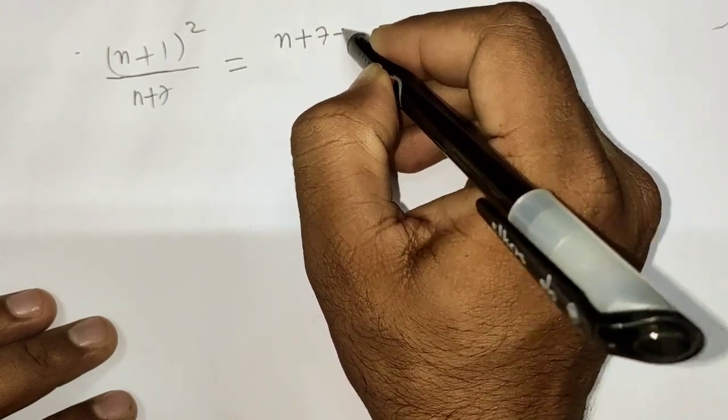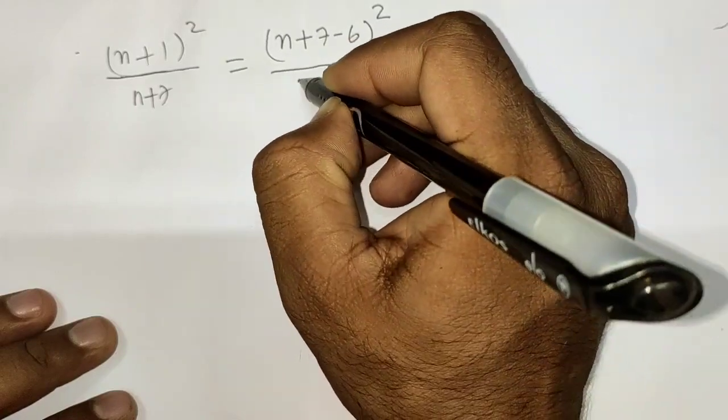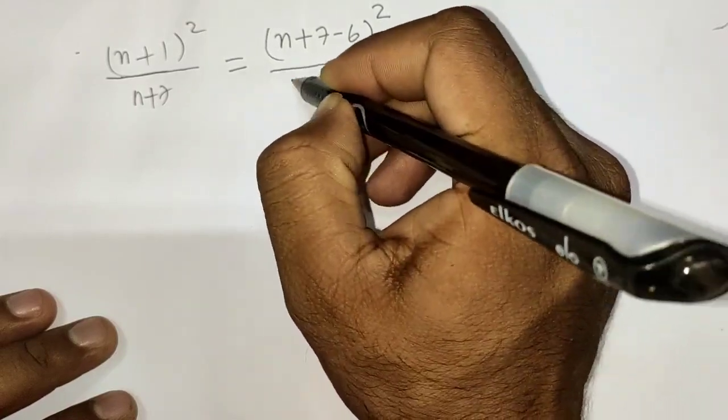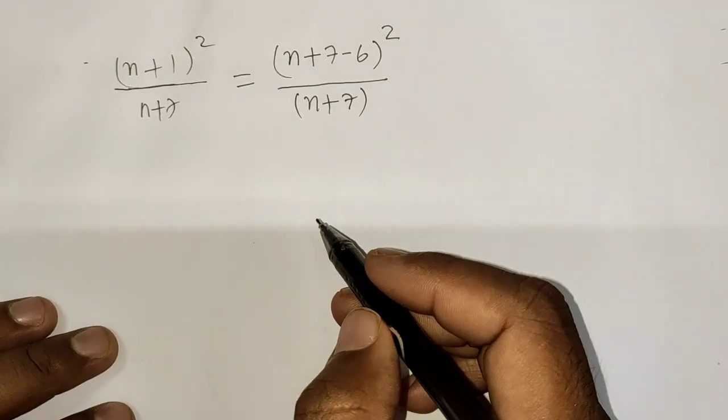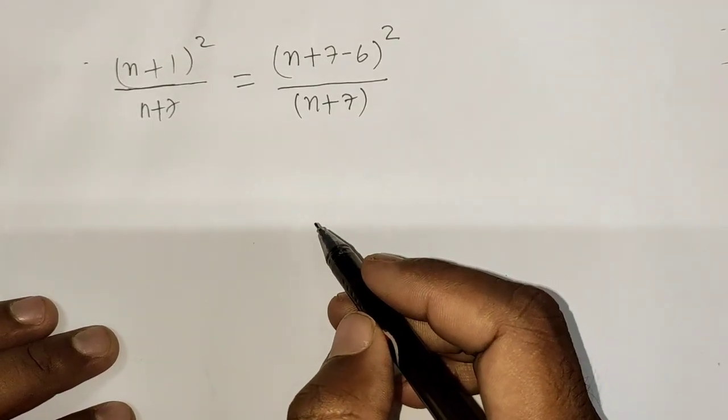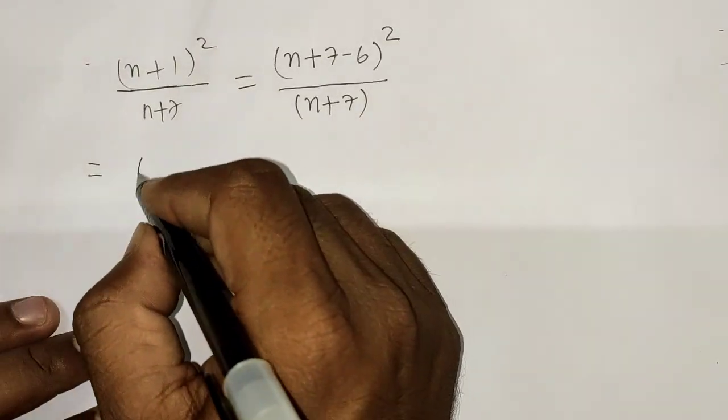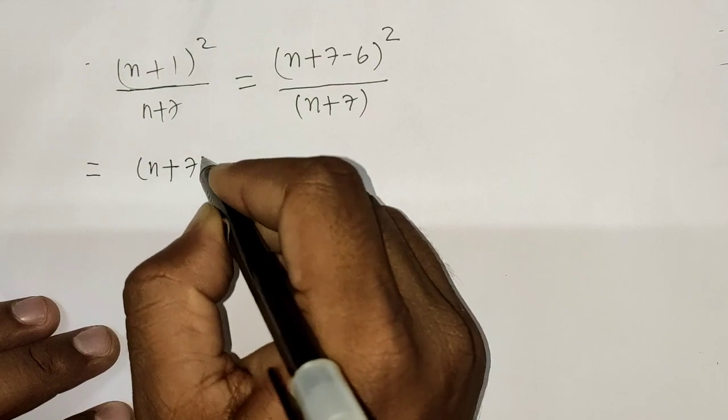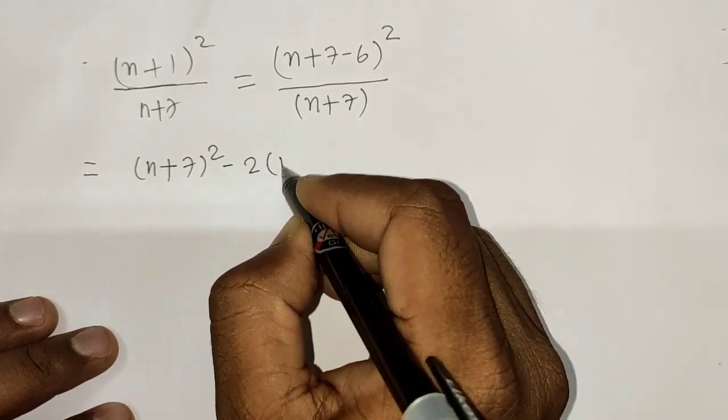I can write this like the numerator, so let me adjust this. When I do this by using the (a+b)² formula, I can rewrite this as (n+7)² - 2(n+7)(6) + 6², whole divided by (n+7).